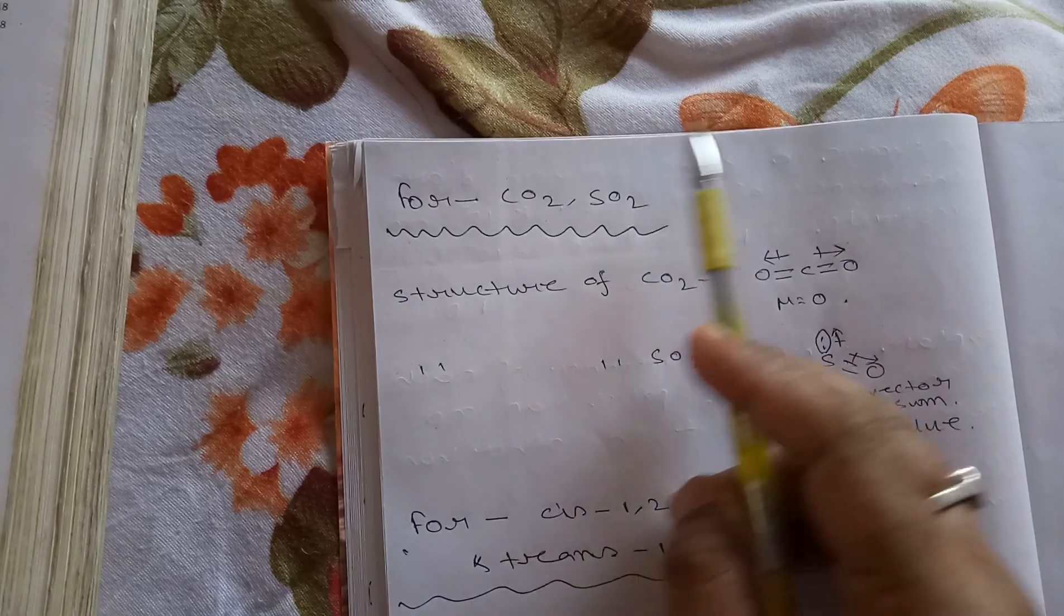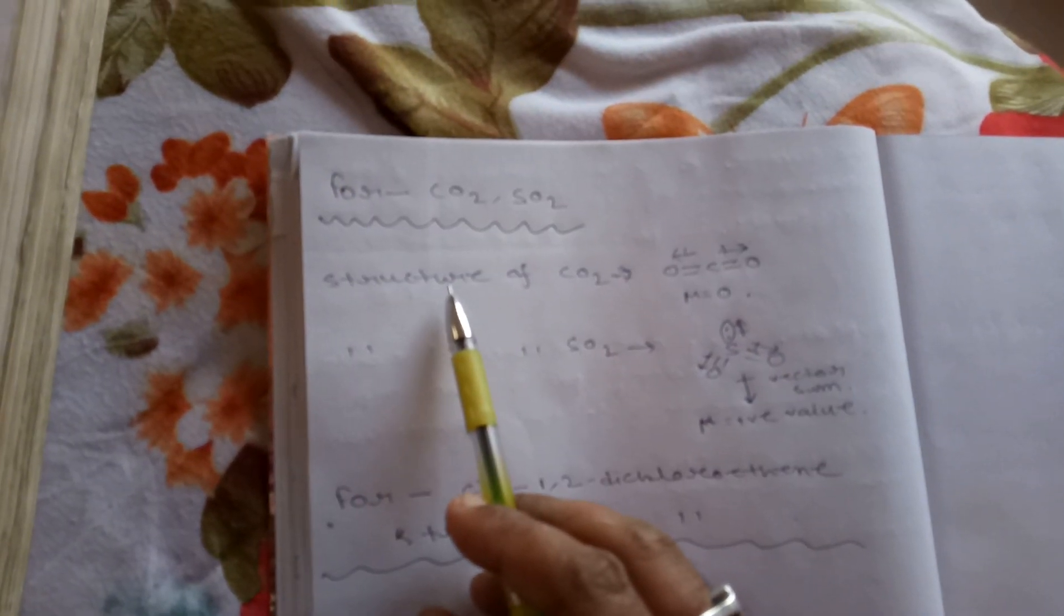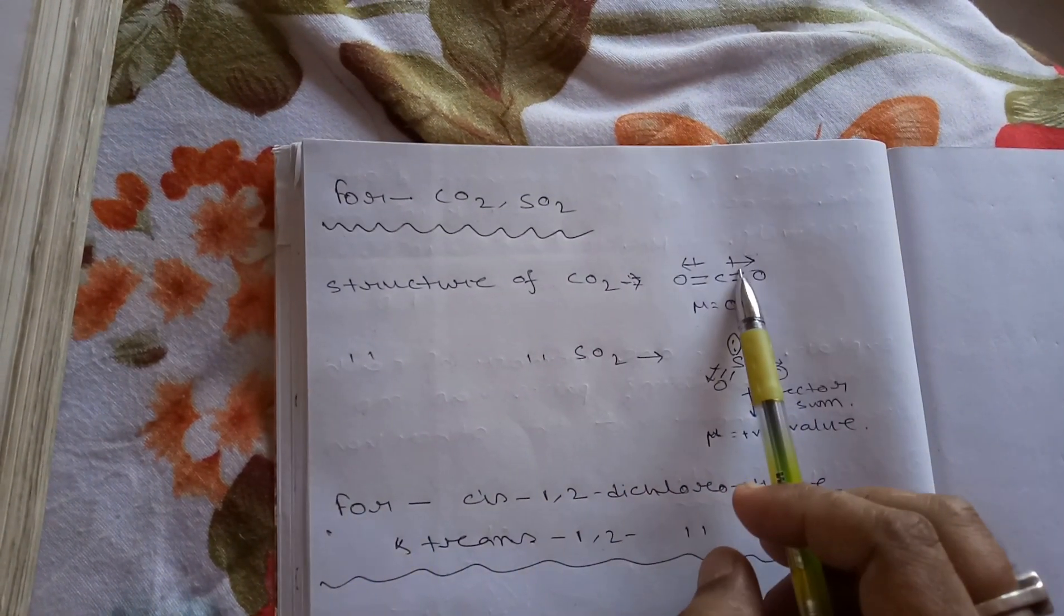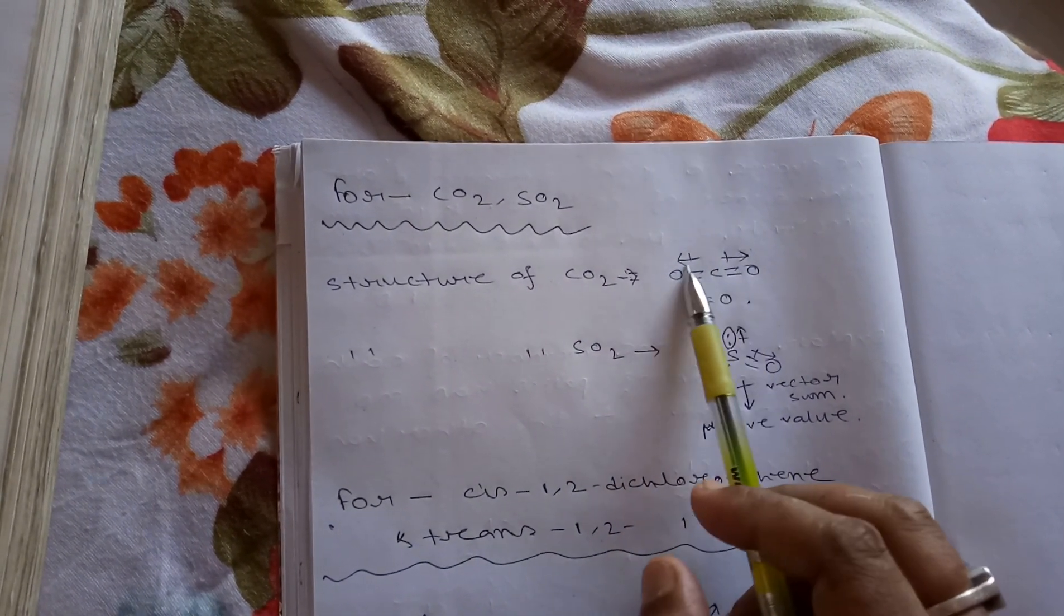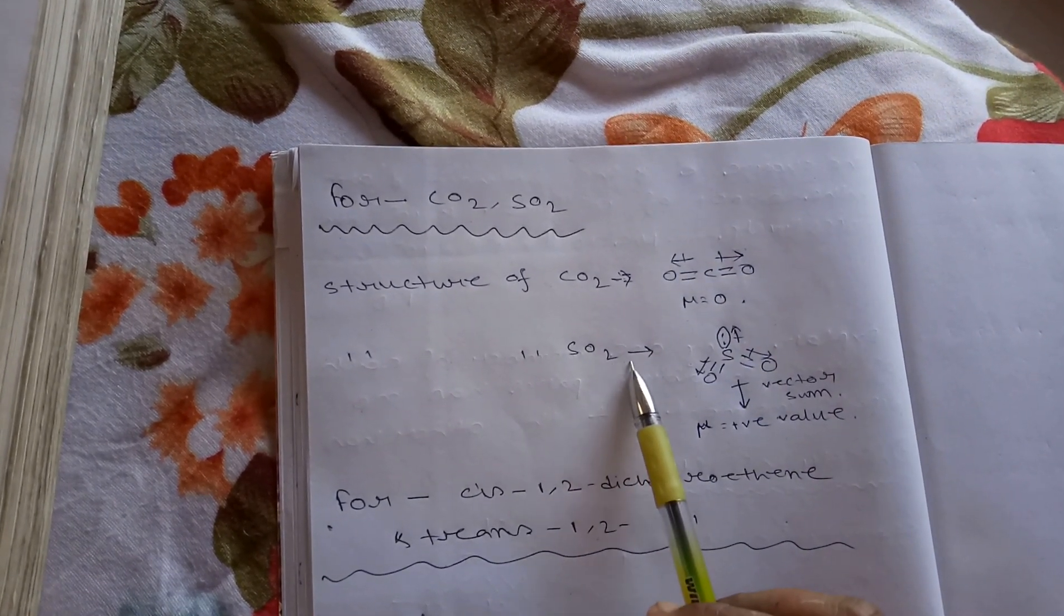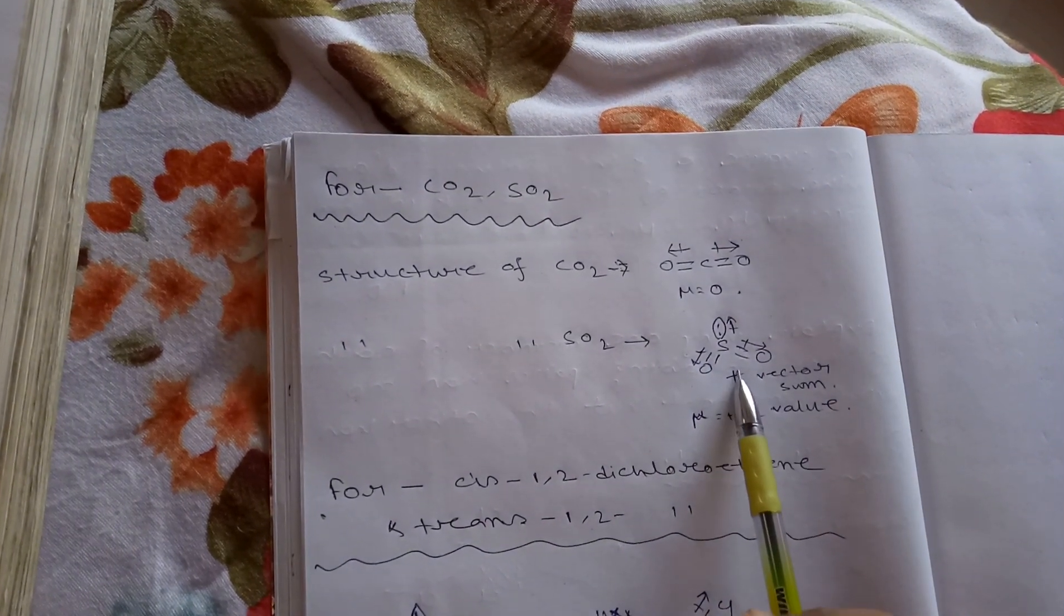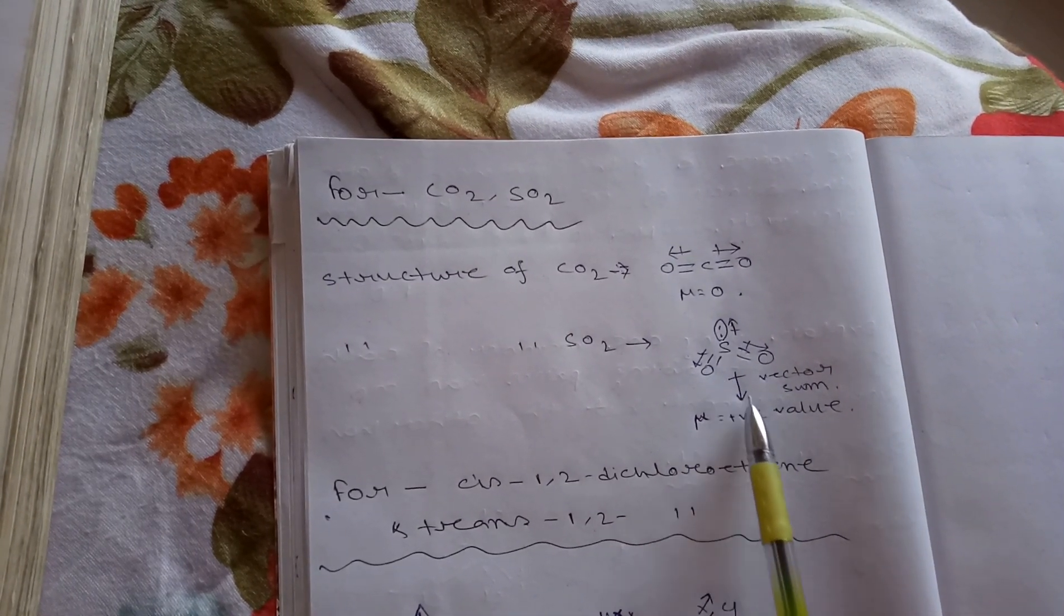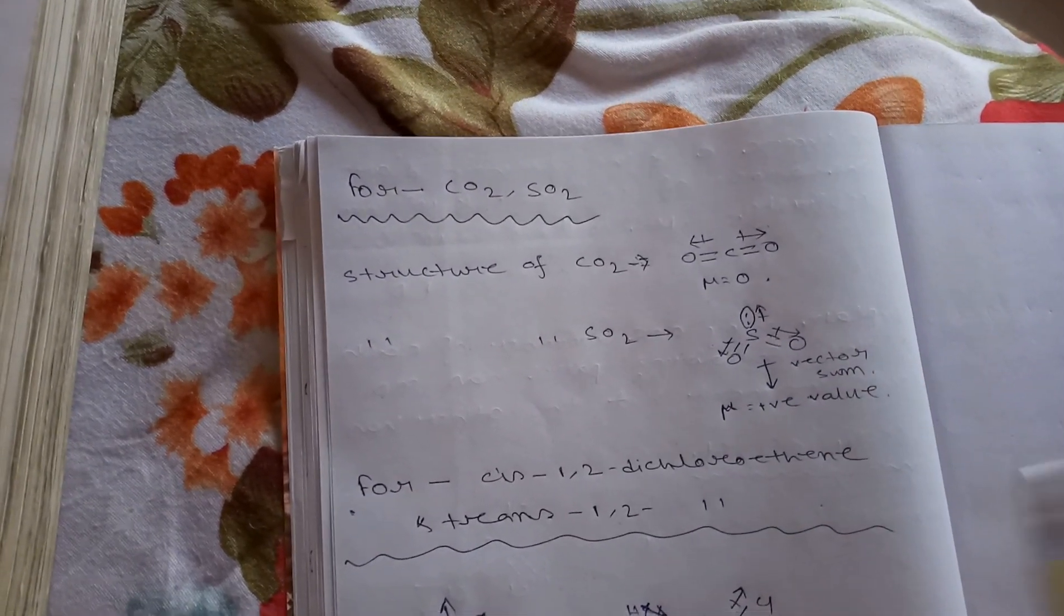Another example is carbon dioxide and sulfur dioxide. Structure of carbon dioxide is like this because carbon has sp hybridization, so the bond moments cancel. It has μ = 0. Whereas in SO2, due to presence of one lone pair, it's not linear and it has some vector sum. That's why it has a positive value of dipole moment.